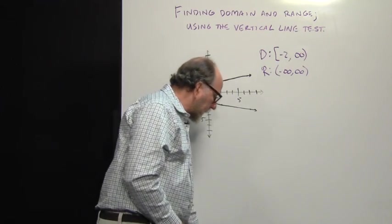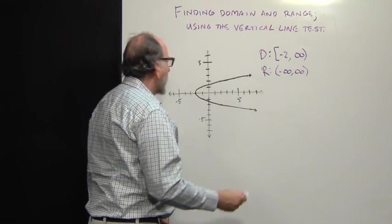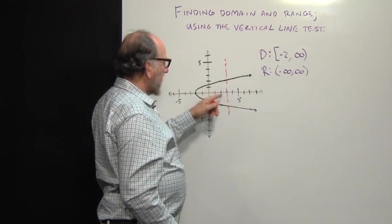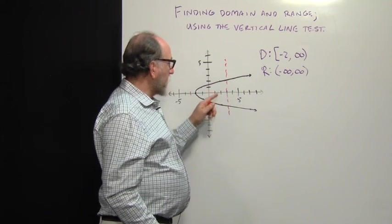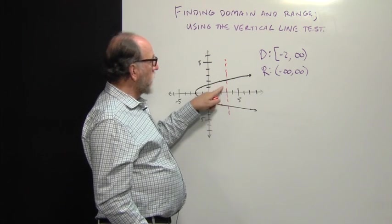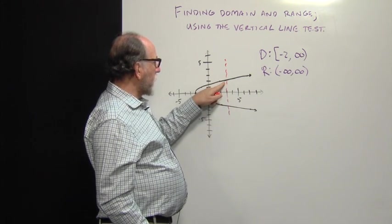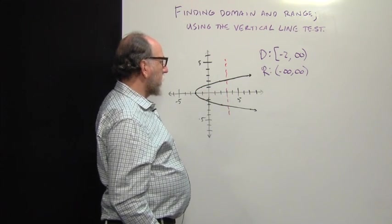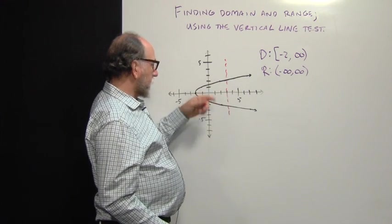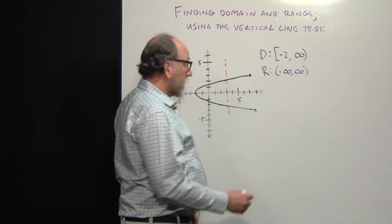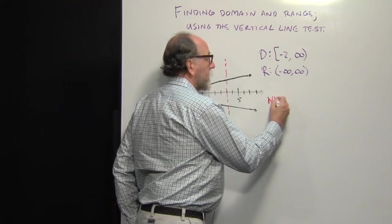Now, we'll try that vertical line test again. If I pass a vertical line through it, I can see that this graph is crossed in two places. So for this positive value of three, for instance, it has a positive value and a negative value for y that are the same distance away from the x-axis. And so this also is not a function.